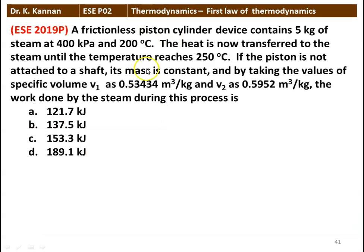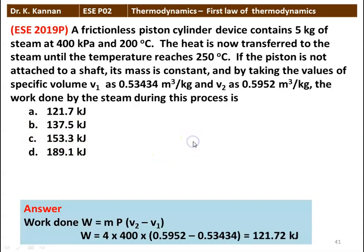Next question: a frictionless piston-cylinder device contains 5 kg of steam at 400 kPa and 200°C. Heat is transferred until temperature reaches 250°C. With V1 = 0.53434 m³/kg and V2 = 0.5952 m³/kg, the work done by the steam is — options: 121.7, 137.5, 153.3, 189.1 kJ. Work = M × P × (V2 − V1) = 5 × 400 × (0.5952 − 0.53434) = 121.72 kJ. The answer is 121.7 kilojoules.